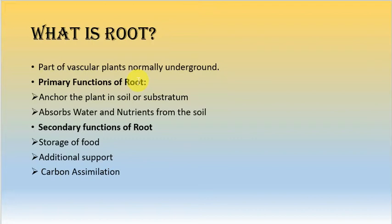The first and most important function performed by the root is the anchoring of the plant — it holds the plant in soil or the substrata. The second most important function is the absorption of water and nutrients from the soil. These are absorbed by the root and supplied to the shoot system by means of the root system.